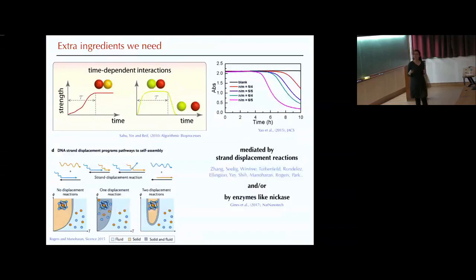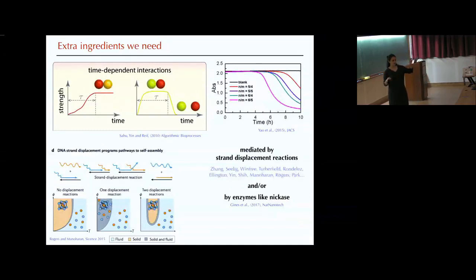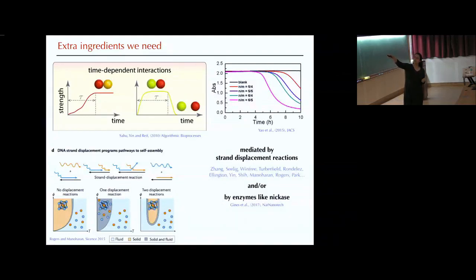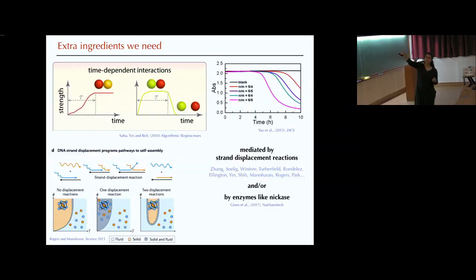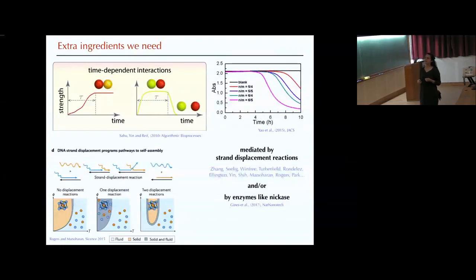The second ingredient is more tricky — these time-dependent interactions. We don't want particles in our solution to spontaneously form aggregates. We want the parents we put in to control what happens. We want particles in solution to take a very long time until they reach their full bond strength, so if two come together at the temperature of the experiment they will just fall apart. But we want them to easily bind to our parent clusters, stay there for some time, and then separate — long enough that bonds between attached particles form and become stable at the given temperature.